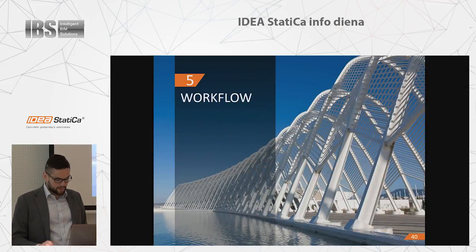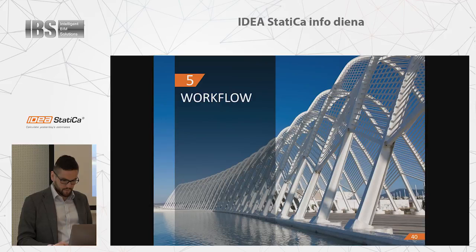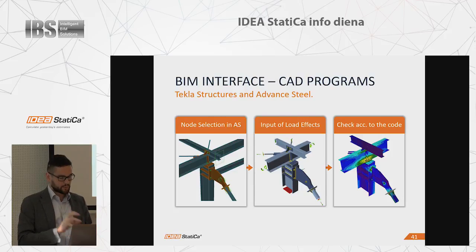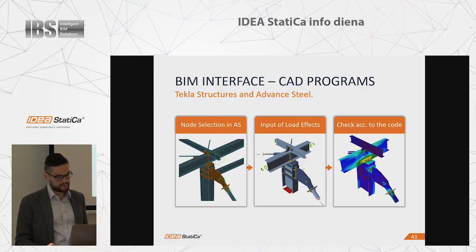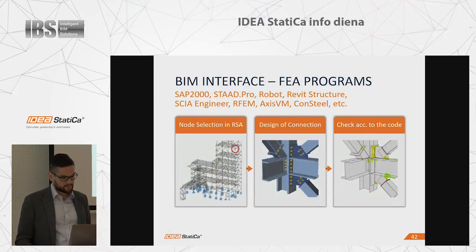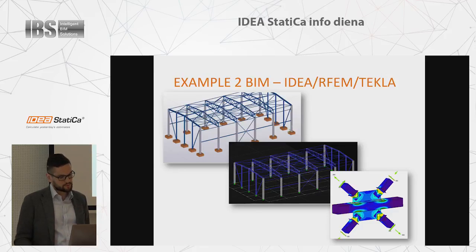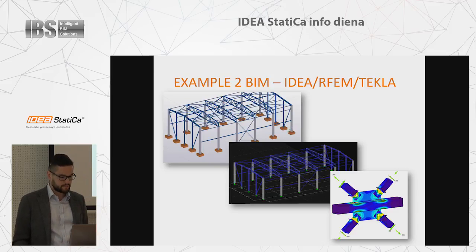Now we're getting to a phase showing how it all works together. We have two types of BIM links. One is with CAD or BIM programs like Tekla Structures and Advanced Steel — you select the node, export it to IdeaStatica, and input loads manually. The second workflow is from analytical packages — Robot, SCIA, STAAD, SAP — select the node, send it to IdeaStatica to design and check. What is new is we can also merge these two workflows, working with RFEM, Tekla Structures, and IdeaStatica together.